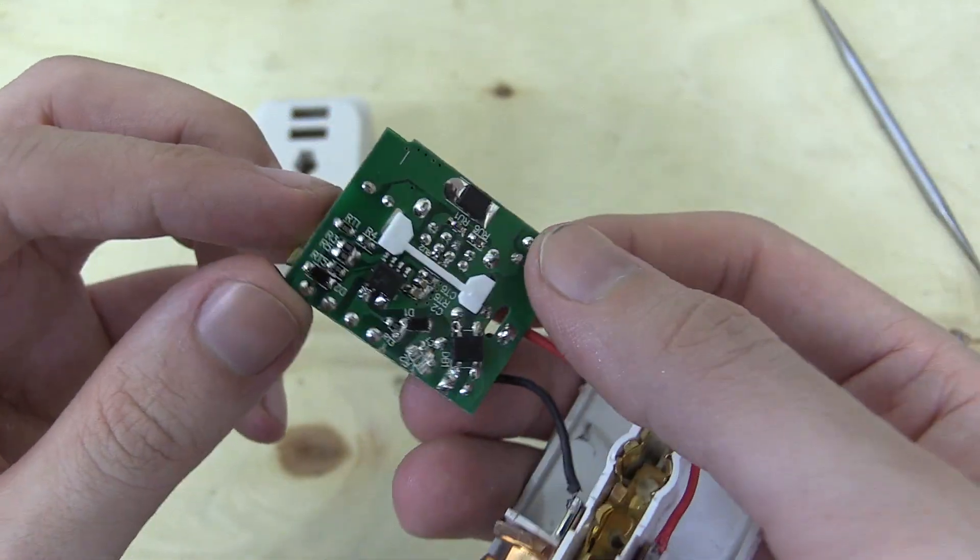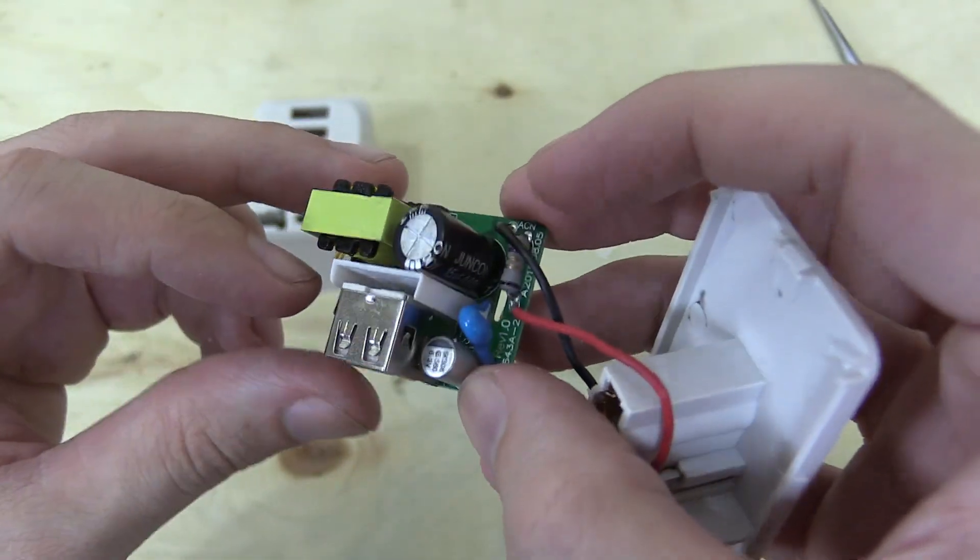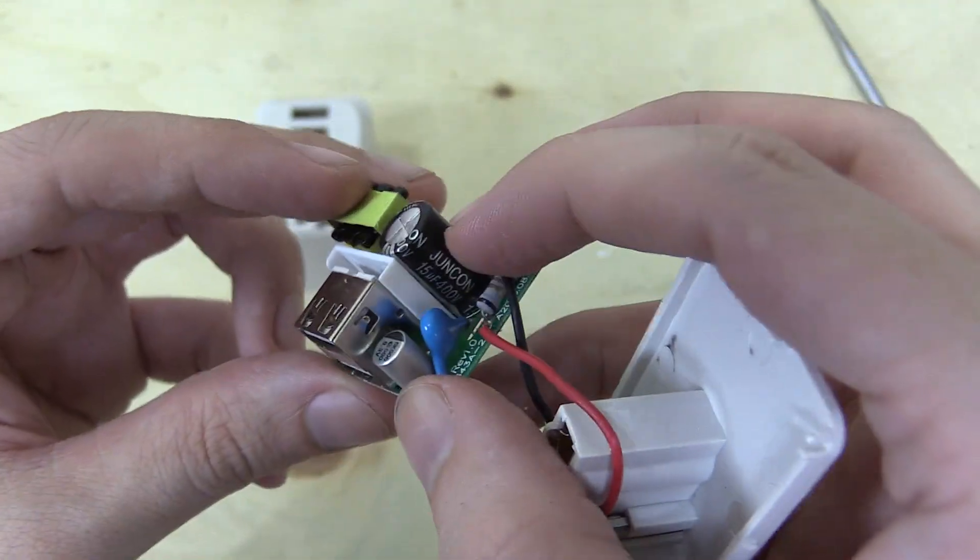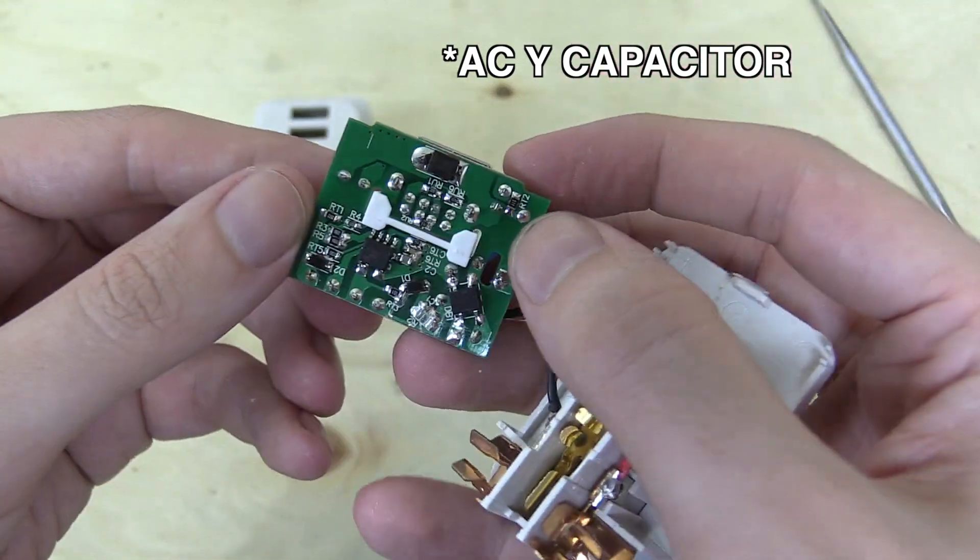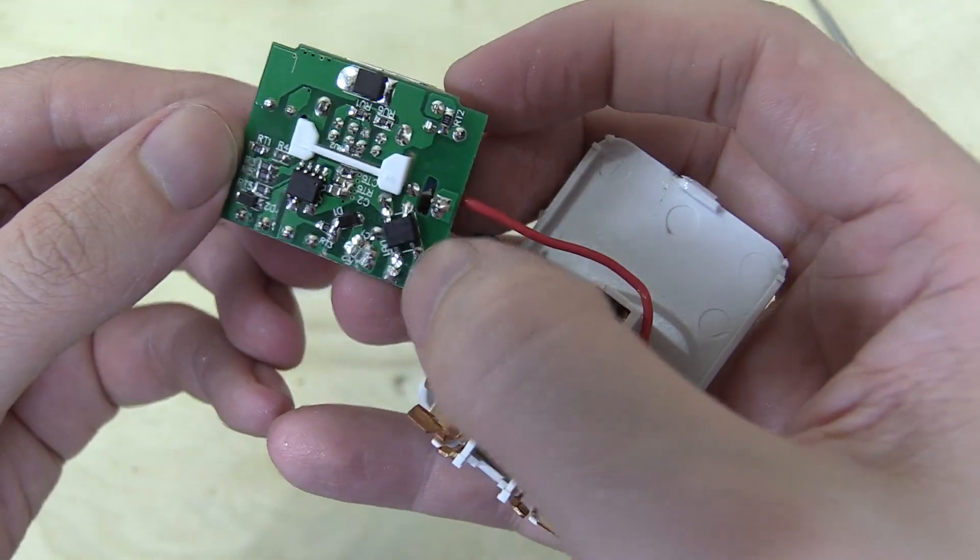Now I'm not going to do a complete breakdown because I'm not an electrical engineer. But obviously we've got a transformer here, smoothing cap. This is probably some kind of surge protection, a MOV. Then underneath, what do we have? We've got a bridge rectifier here.